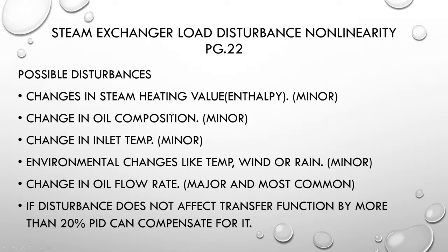Most of these things remain consistent on a day-to-day basis. Generally, when we do production or output changes, we're changing the flow through the plant, which ties in with the oil flow rate. We said earlier, if the disturbance does not affect the transfer function by more than 20%, we can get PID to compensate for it. We just need to be aware of these disturbances and how they potentially affect our decisions on making a control strategy.